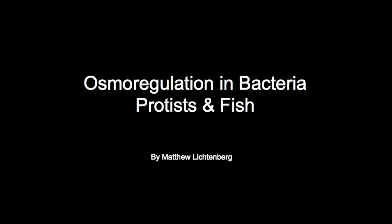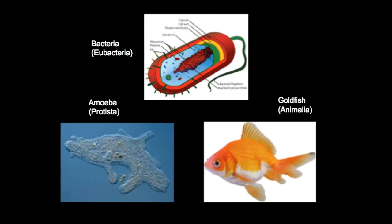Hello, today we will be talking about osmoregulation in bacteria, protists, and fish. Bacteria, protists, and fish belong to the kingdoms of Eubacteria, Protista, and Animalia respectively, and each of these three kingdoms has their own way of maintaining homeostasis through osmoregulation.